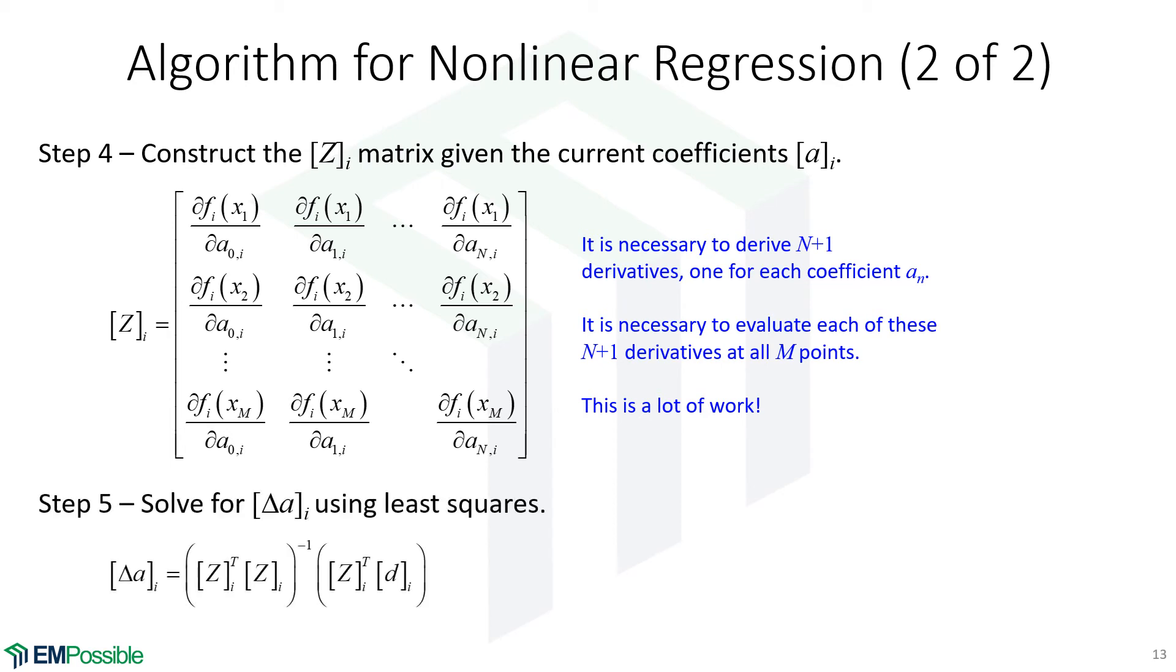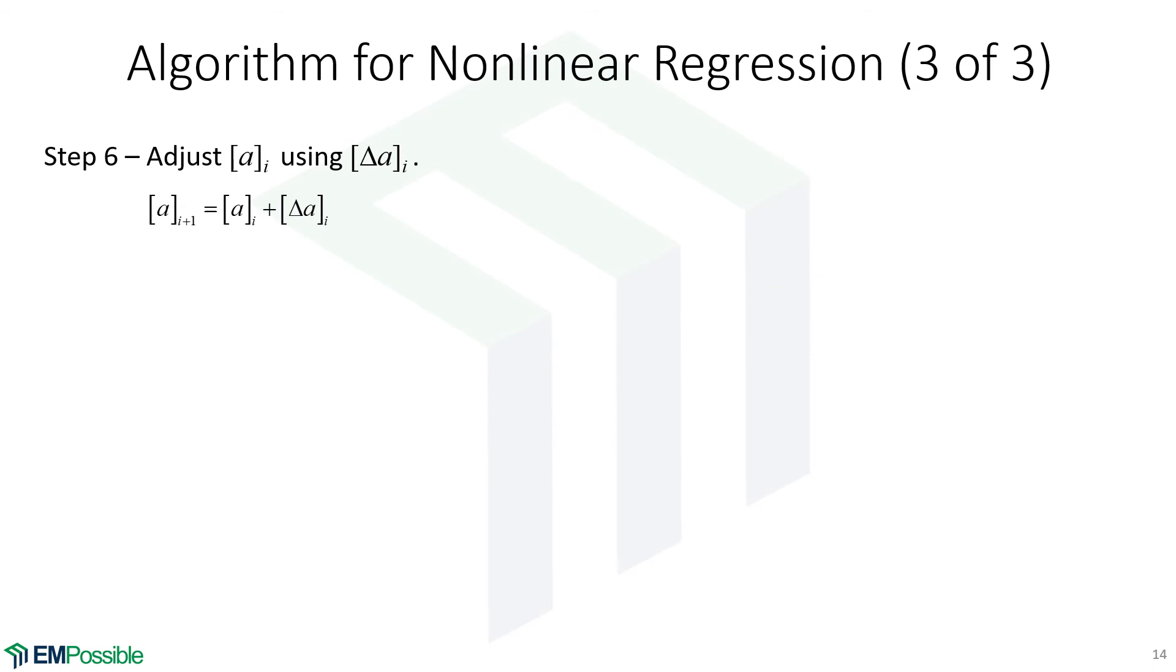And then we use least squares to solve for delta A. So it's really just this one equation. Once that's derived, that's pretty simple in the code. That delta A tells us how much we need to adjust our curve parameters by so that we have a better curve fit in the next iteration. So the delta A is really just how much we're changing our curve fit parameters, which we're storing in the column vector A. So the curve fit parameters for the next iteration, iteration I plus one, is the curve fit parameters from the previous iteration I plus this update delta A.